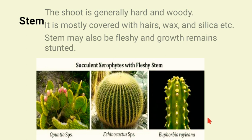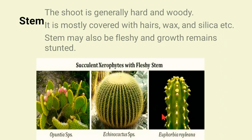The shoot is generally hard and woody, mostly covered with hair, wax, and silica. The stem is fleshy and the growth of xerophytes is stunted. These are succulent xerophytes with fleshy stems — this stem stores water. Examples include Opuntia, Echinocactus, and Euphorbia royleana. These stems are covered by spines or hair, which are basically reduced leaves.